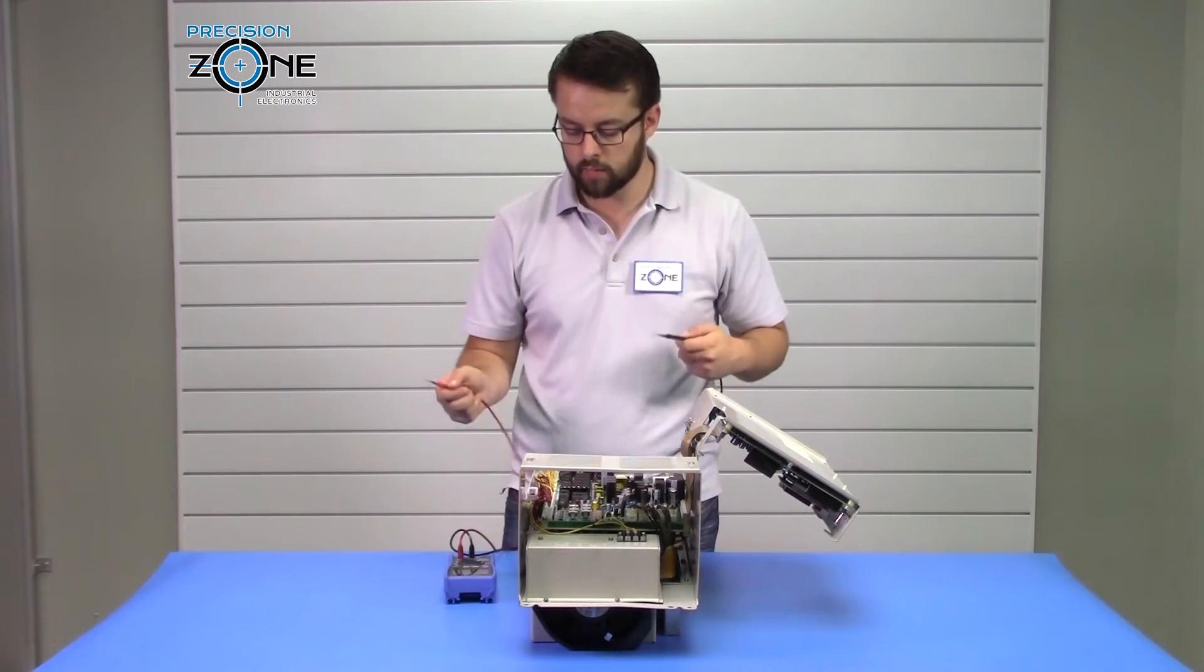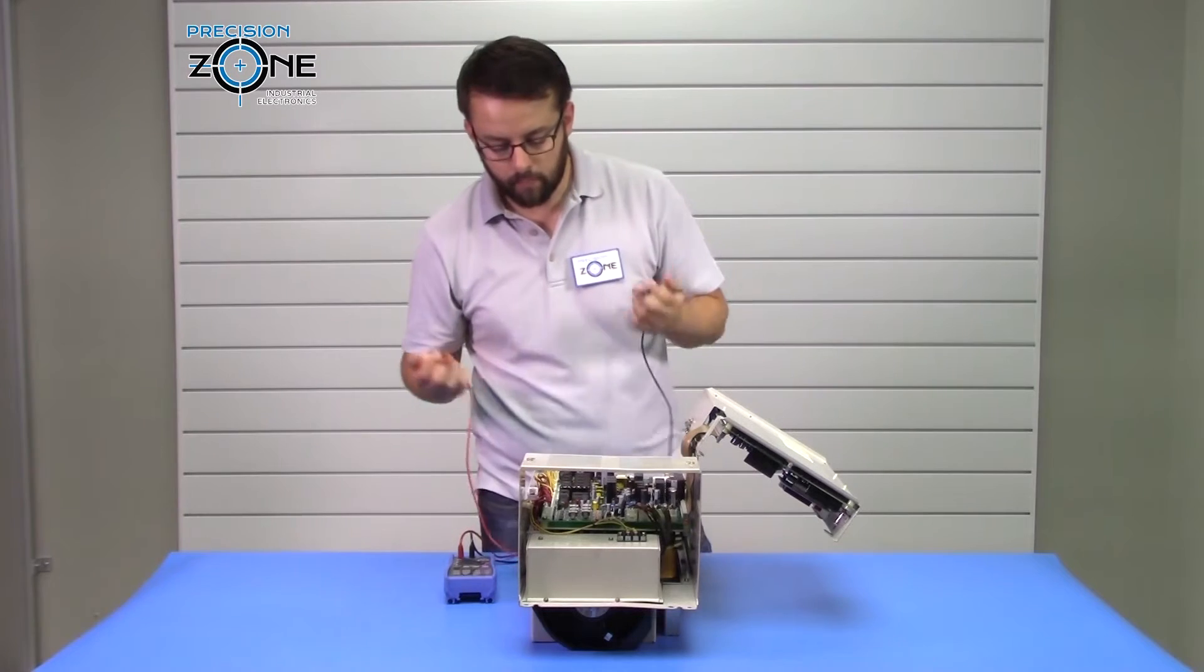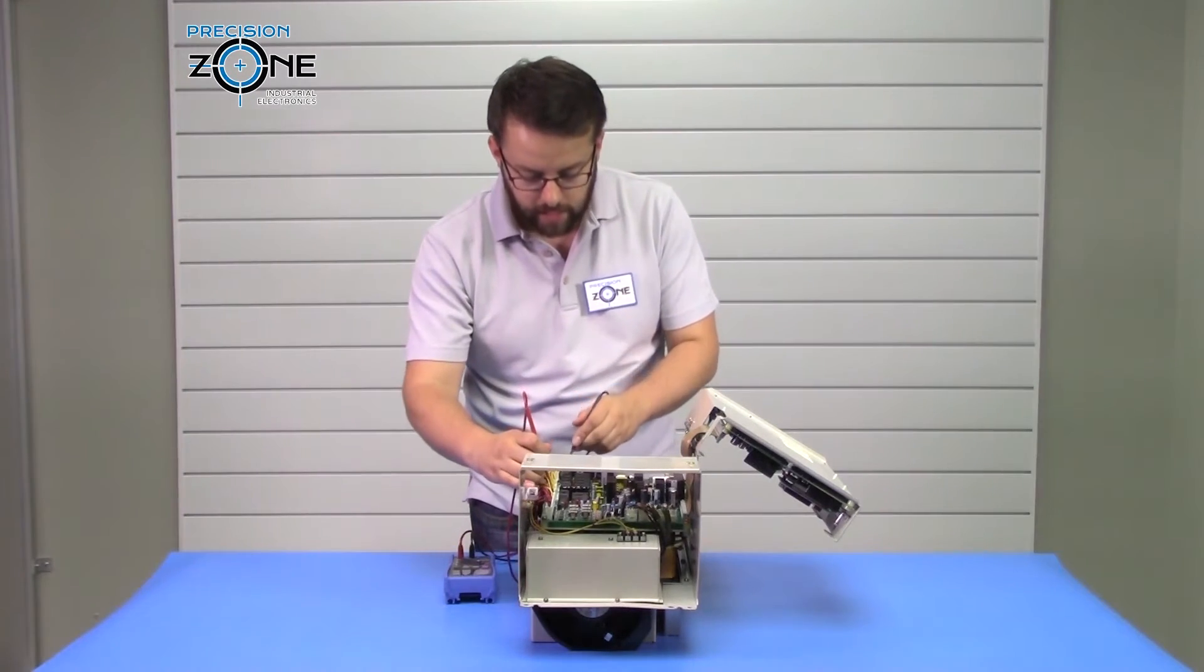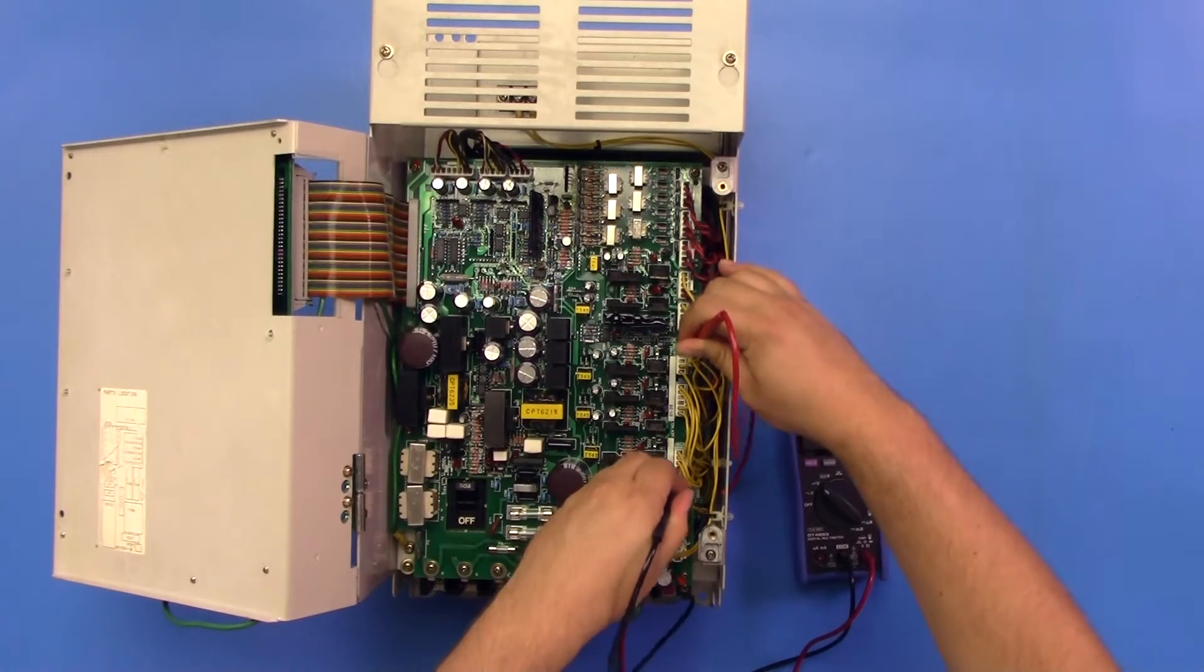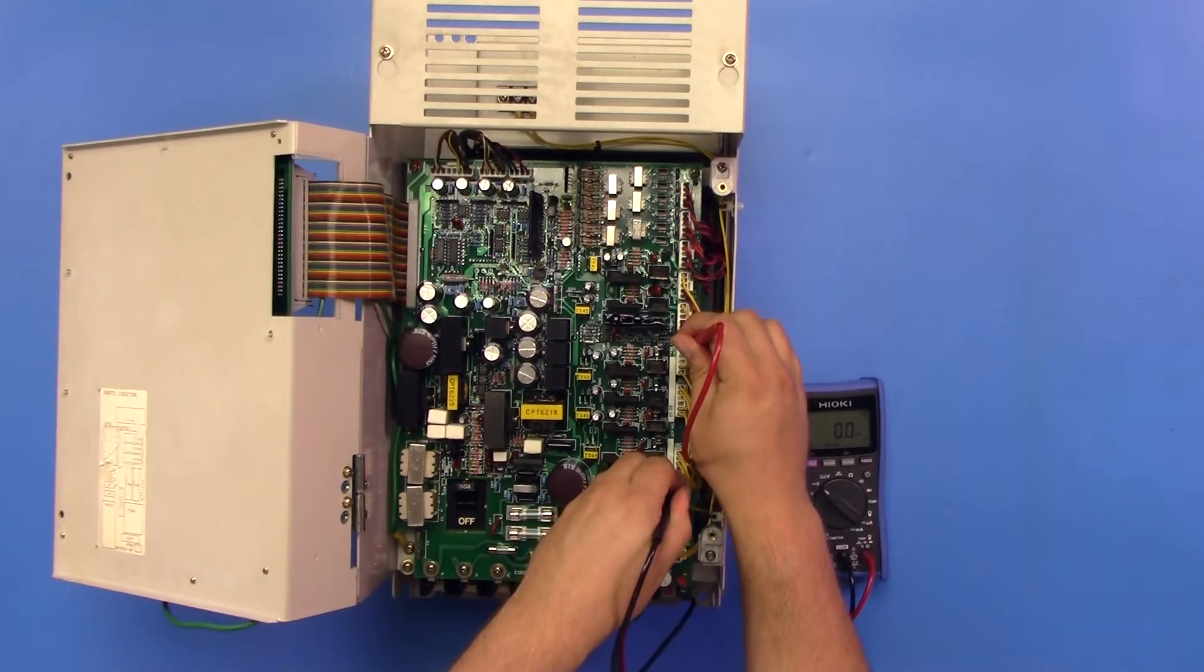You're going to set your digital multimeter to DC voltage check function. You're going to put the positive side to the P side pin of this and to the N. Here we're reading about two millivolts, a little under that, so that is safe.